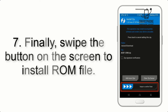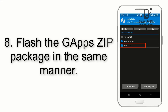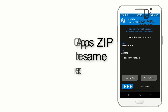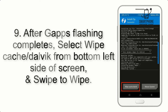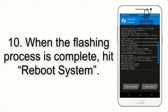Step 7: Swipe the button on screen to install the ROM file. Step 8: Flash the GApps zip package in the same manner. Step 9: After GApps flashing completes, select Wipe Cache and Dalvik from the bottom left side of the screen and swipe to wipe.